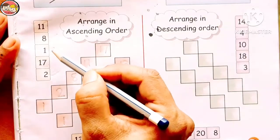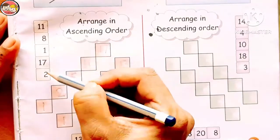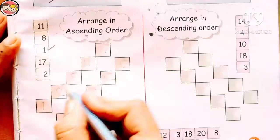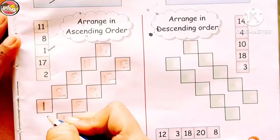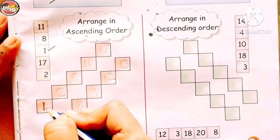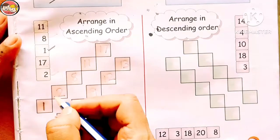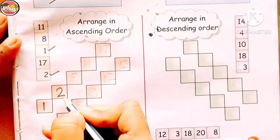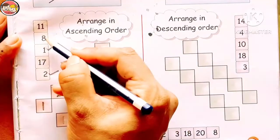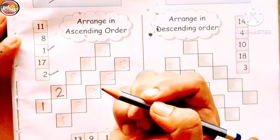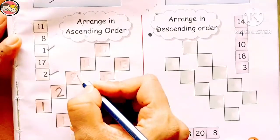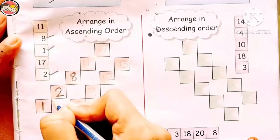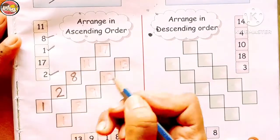Now tell me, which is the smallest number among these numbers? Yes, number 1. So first we have to write number 1. Next, which number comes after number 1? Yes, definitely number 2. So here we have to write number 2. Next, 11, 8, and 17 are left. So what should I write after number 2? Yes, number 8. These three numbers are one-digit numbers.